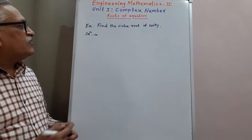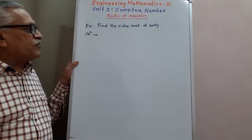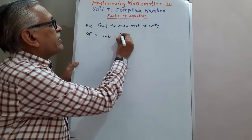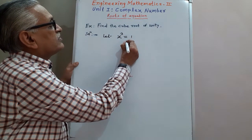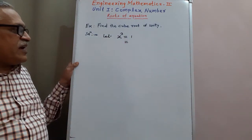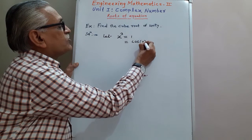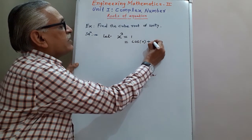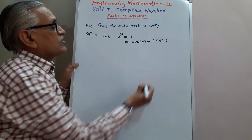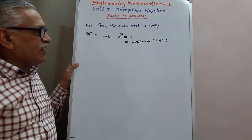First example: find the cube root of unity. To obtain this cube root of unity, let x cubed be equal to 1. This 1 we can write as cos 0 plus i sine 0. We know that cos 0 is 1 and sine 0 is 0, and therefore we get the value as 1.